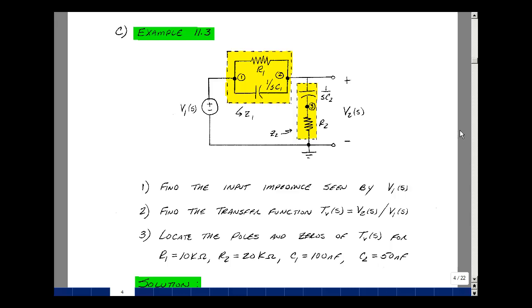Let's do an example. Consider the circuit where I've got an R and C in parallel and an R and C in series. I'll call this combination Z1 and this combination Z2. My input V1(s), and I'll call my output V2(s). Can you find the input impedance seen by V1(s)? Can you find the transfer function, V2 divided by V1? That would be a voltage transfer function.